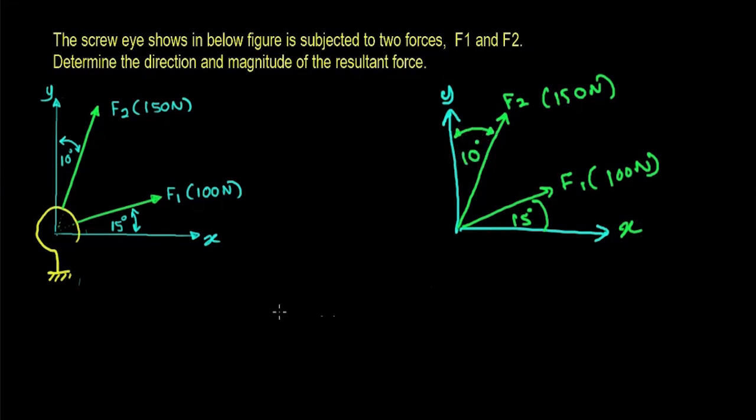If I write an equation for Y direction, I can write it as F2 cos 10. This part will give the component of F2 force for Y direction, and plus F1 time.